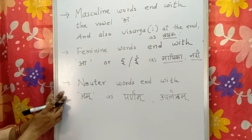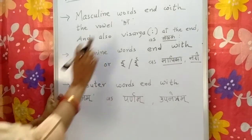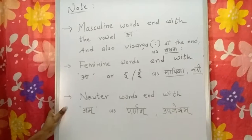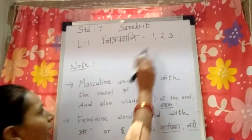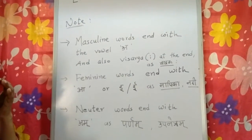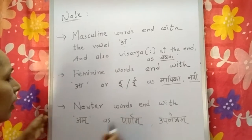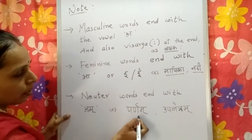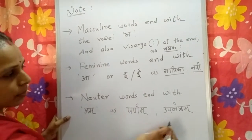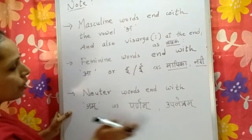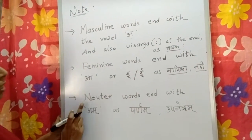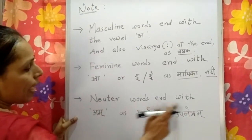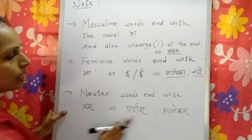Now neuter gender. In Chitrapadhani 3 there are neuter words which end with 'am'. For example, parnam — 'am'; upanetram — 'am'. In Chitrapadhani 3 the words which are neuter words end with 'am', as in parnam.